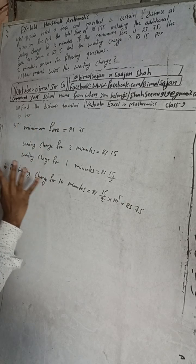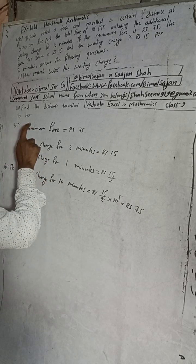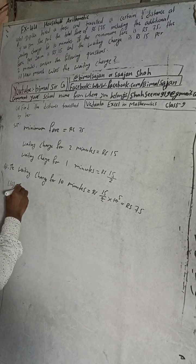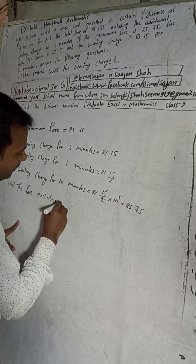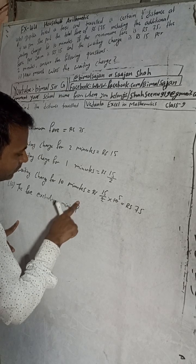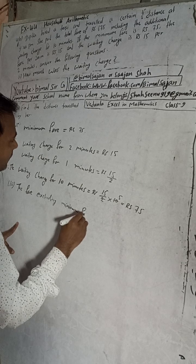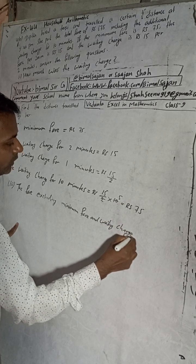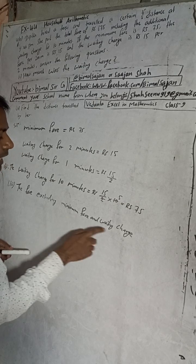Now to find the distance traveled by her, first we have to calculate the fare without the minimum charge and without the waiting charge. So the fare excluding minimum charge and waiting charge equals the total fare minus minimum charge minus waiting charge.